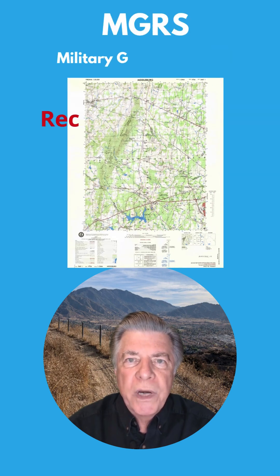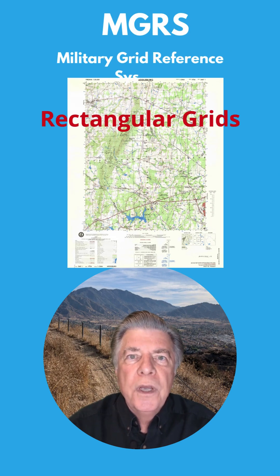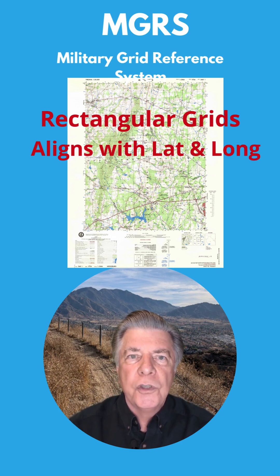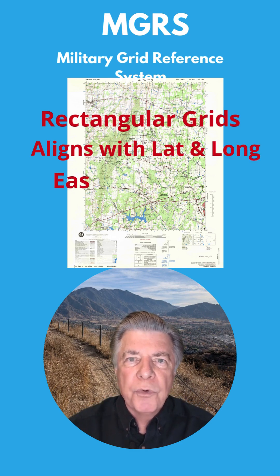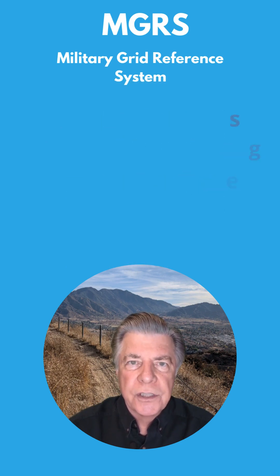One, they are true rectangle grids. Two, they are superimposed on the projections of latitude and longitude. And three, they make it so much easier to measure distance and directions.